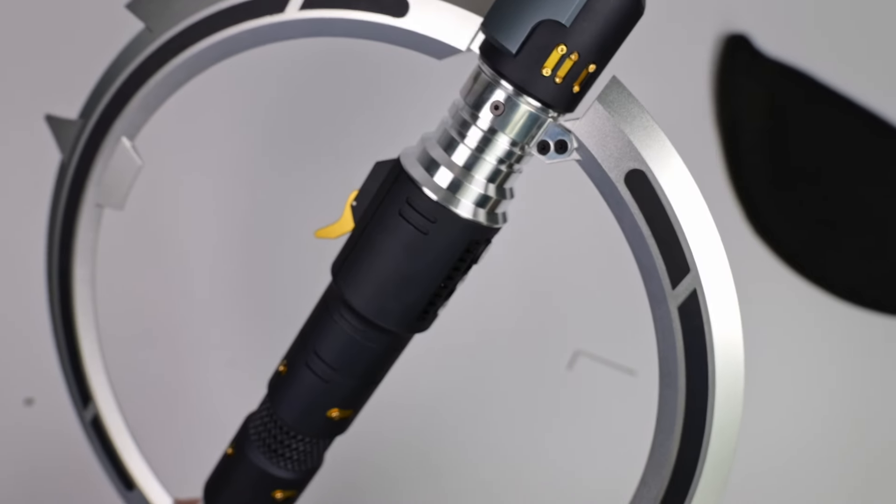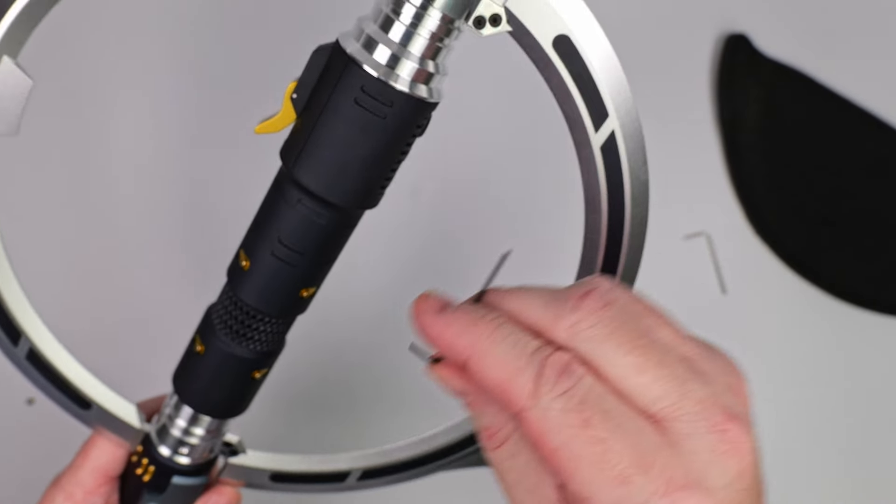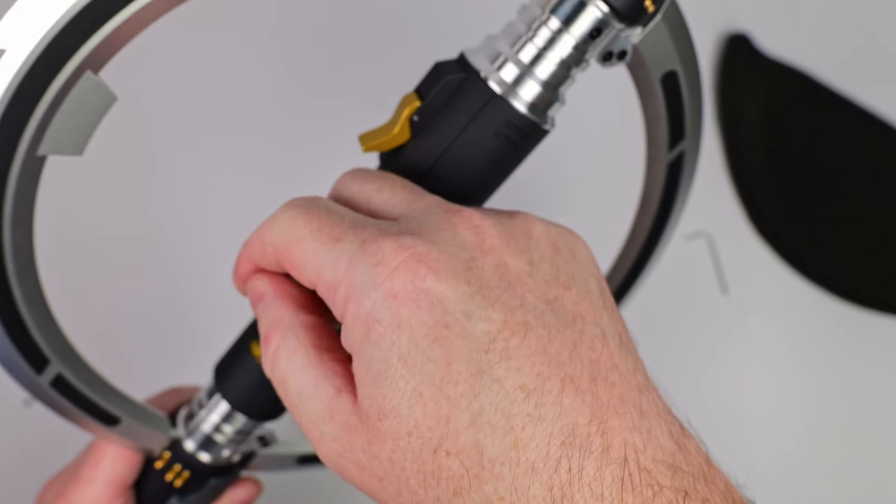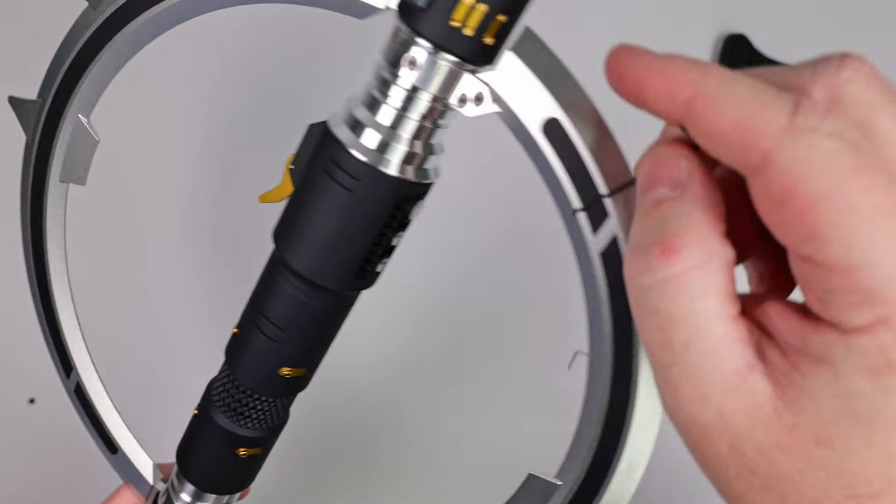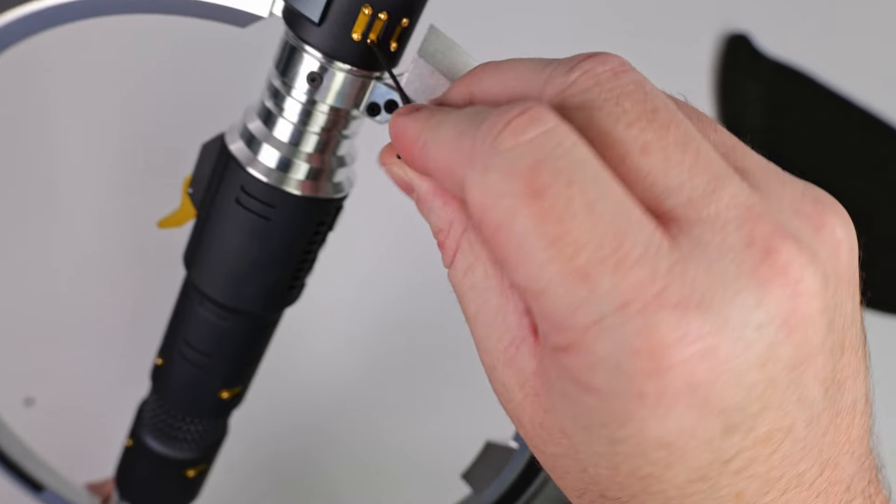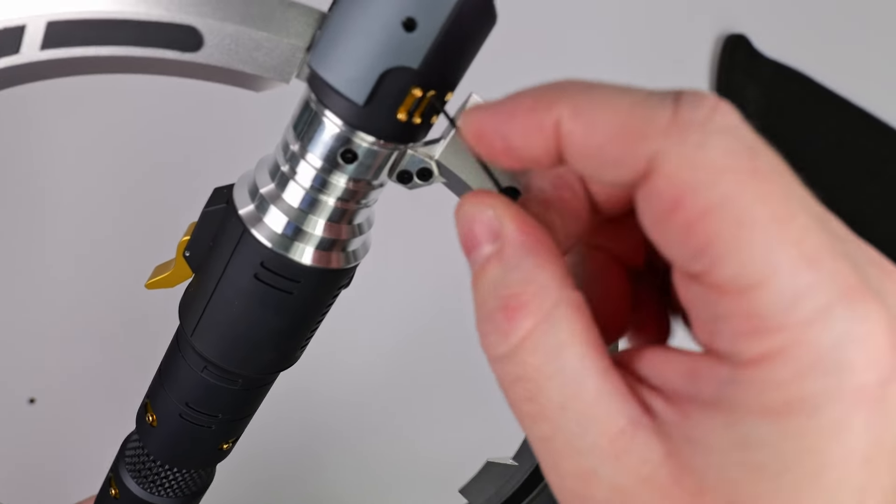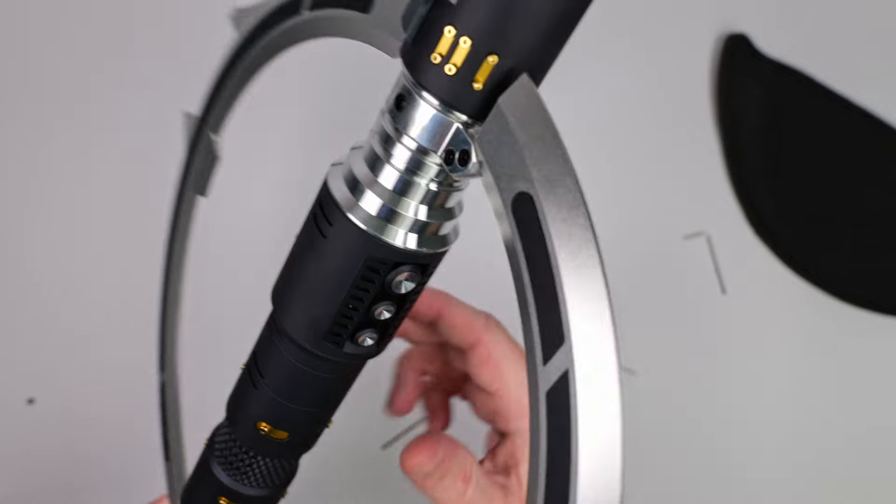You will find other little allen keys. That's just to tighten up these. So when you get them, I would just check, make sure that these little screws are all done up. When I was going through them, a couple of them were loose. So again, just go through and make sure these are all tightened up.